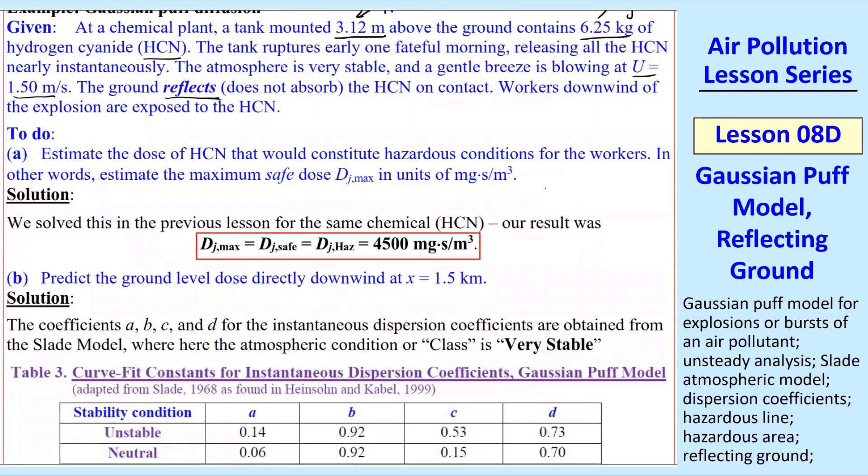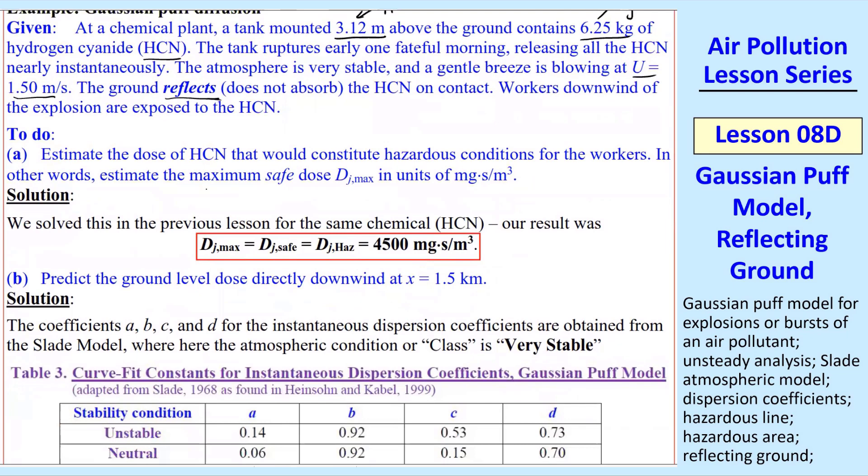Part A is exactly the same as last time. We want to calculate the maximum safe dose, DJ max, and we did that before. We used the STEL from the NIOSH pocket guide, so we got 4,500 milligram second per meter cubed. That's the same as before.